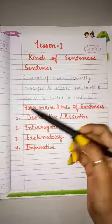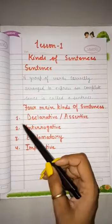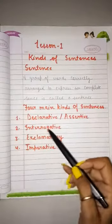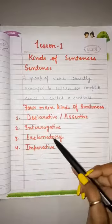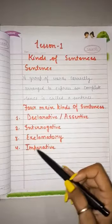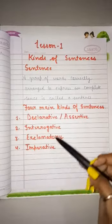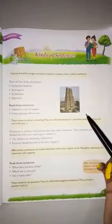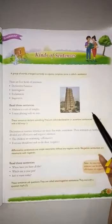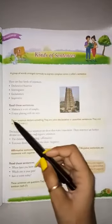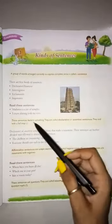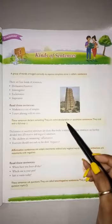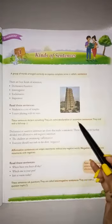We have four main kinds of sentences: first is declarative, second is interrogative, third is exclamatory, and fourth is imperative. Now let's look at declarative sentences. These sentences declare something and are called declarative or assertive sentences.